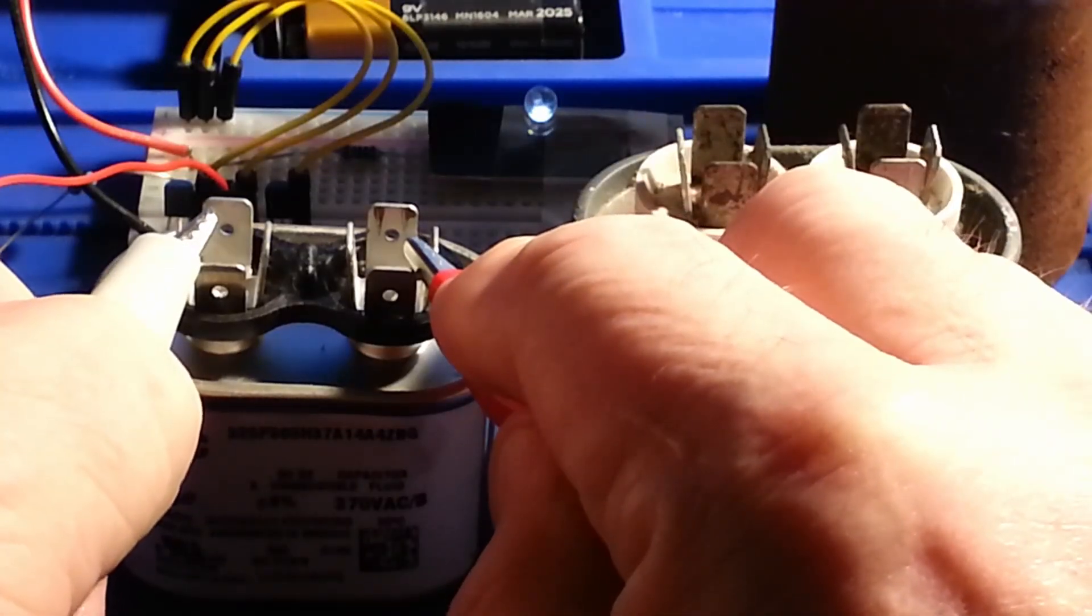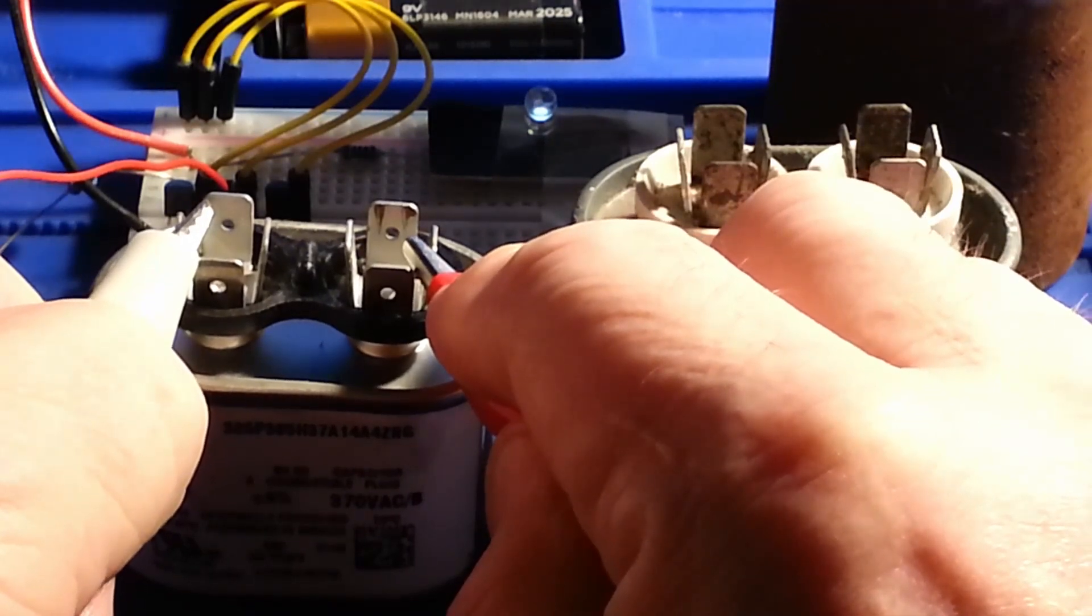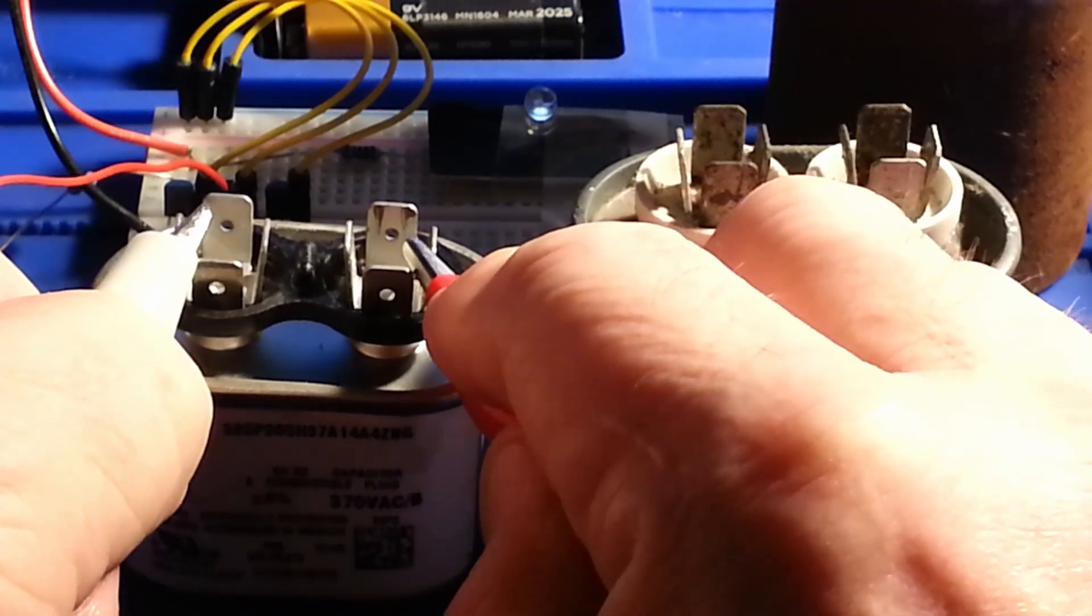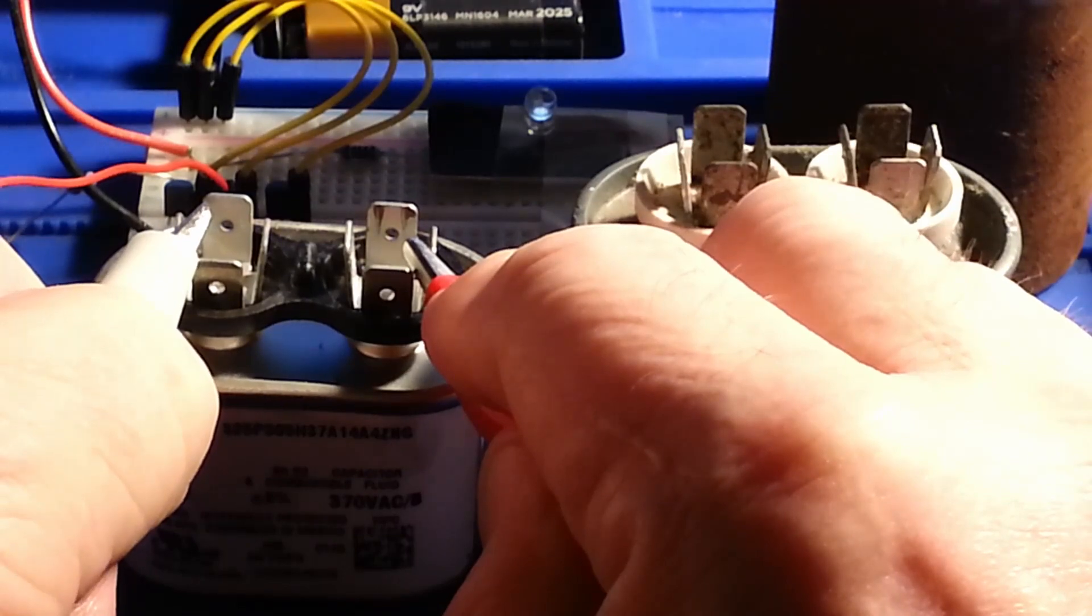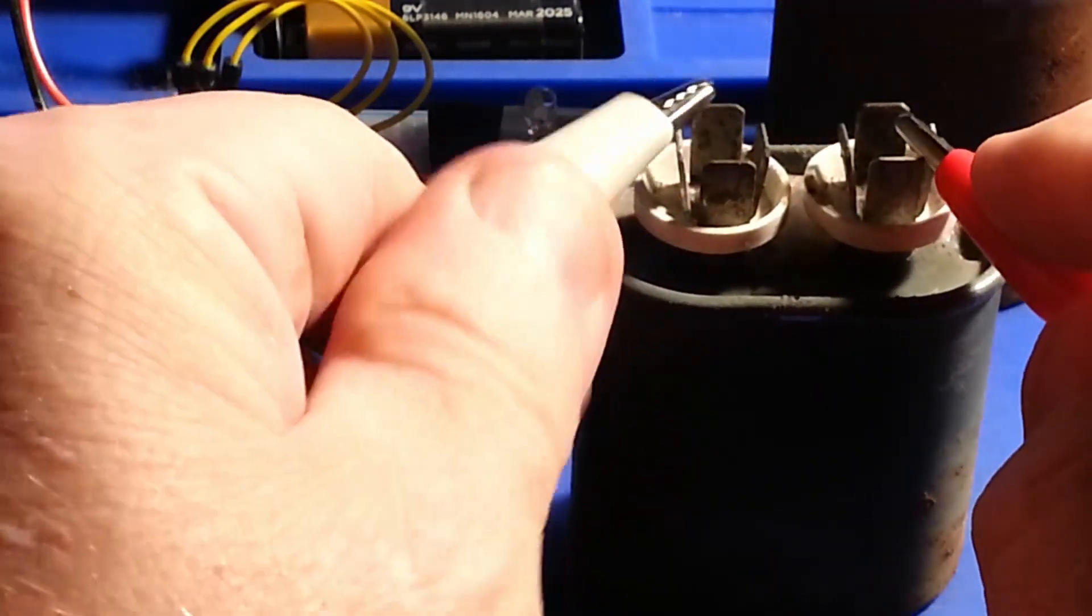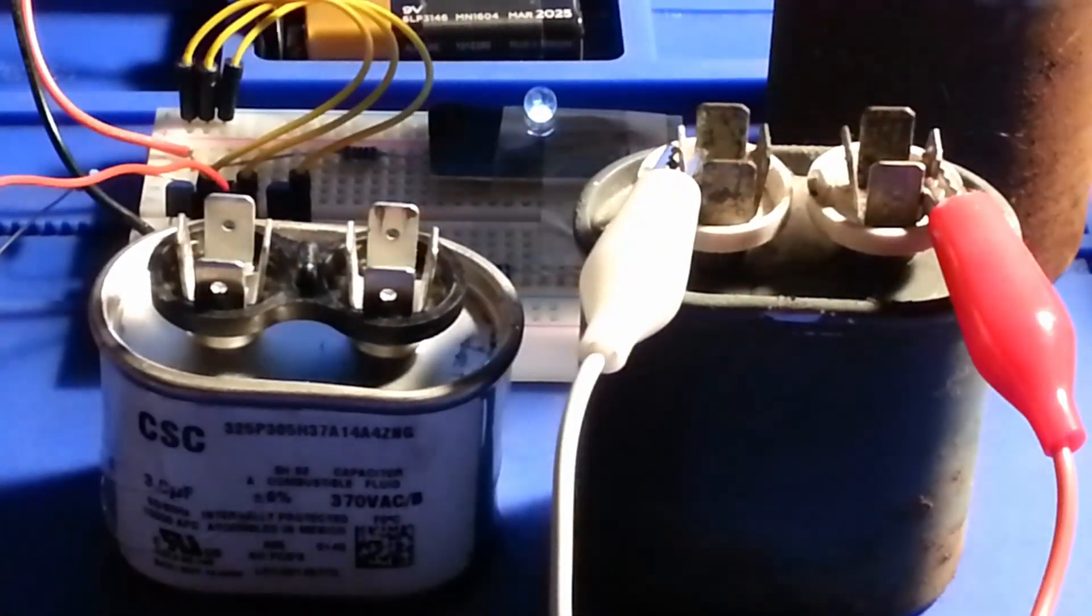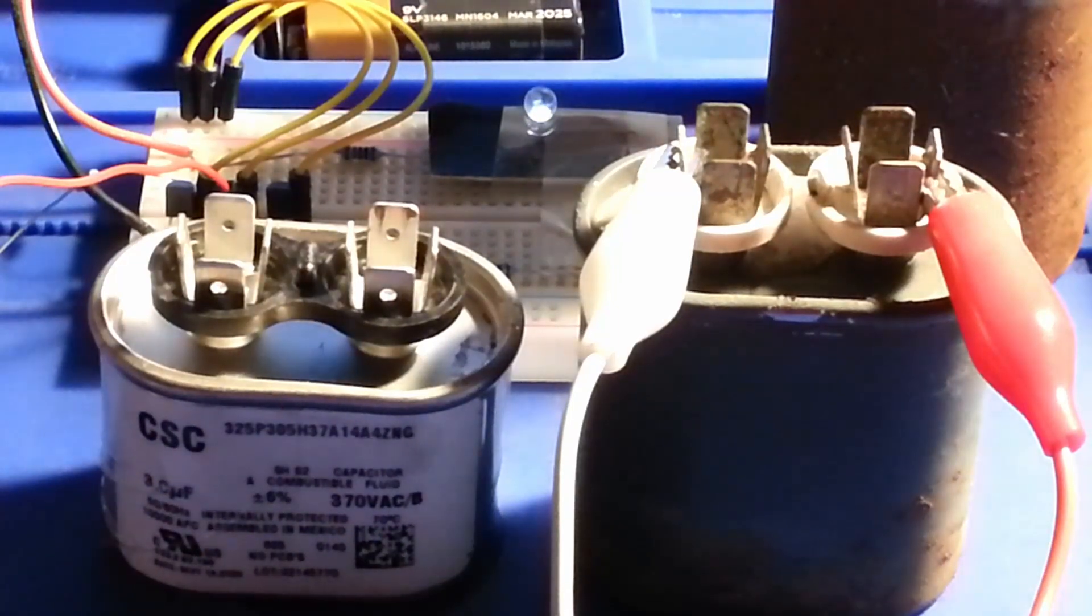it'll indicate a bit of a leakage but not much if any. This one's behaving about the same. That's about, I want to say that's about a gigaohm. It's indicating we're a little under, but you know leakage just isn't there on the old capacitor compared to the new one.